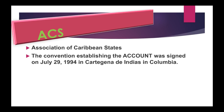Members of the ACS include Antigua and Barbuda, the Bahamas, Barbados, Belize, Colombia, Costa Rica, Cuba, Dominica, Dominican Republic, El Salvador, Grenada, Guatemala, Guyana, Haiti, Honduras, Jamaica, Mexico, Nicaragua, Panama, Saint Kitts and Nevis, Saint Lucia, Saint Vincent and the Grenadines, Suriname, Trinidad and Tobago, and Venezuela. Associate members are Aruba, France, the Netherlands Antilles, and Turks and Caicos.